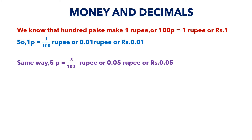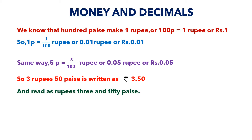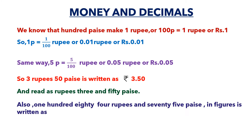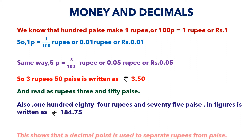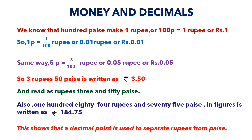Similarly, five paise is equal to five upon hundred rupees, or rupees zero point zero five. Three rupees fifty paise is written as rupees three point five zero. Also, one hundred eighty four rupees and seventy five paise in figures is written as rupees 184.75. This shows that a decimal point is used to separate rupees from paise.